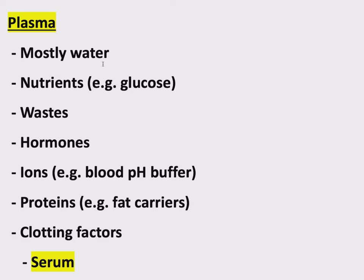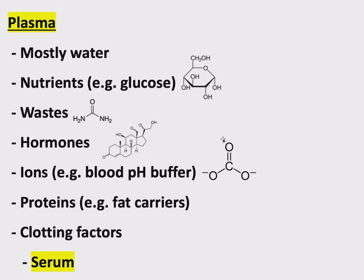Plasma also contains nutrients, stuff like glucose that your body is circulating around to get from one place to another. Wastes, stuff like urea that we'll talk about in a later chapter, that circulates in the bloodstream and is part of the plasma. Hormones, signaling molecules that your body is using to send messages from place to place. Also stuff like the carbonate-bicarbonate buffer that is used to buffer pH in the blood.